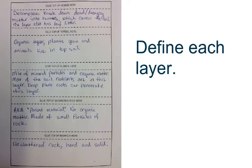Next, you're going to identify each layer. So, what is topsoil? Well, in topsoil, decomposers break down dead or decaying matter into humus, which covers the soil. The layer also has leaf litter within it.